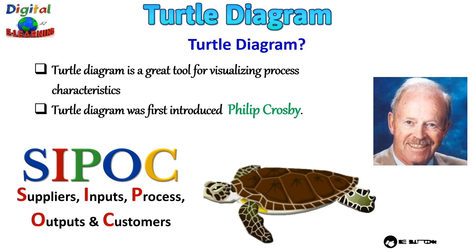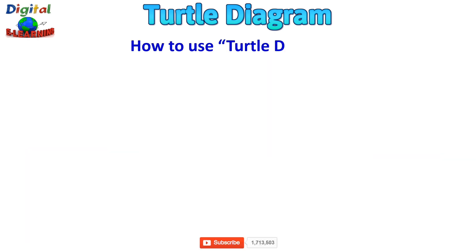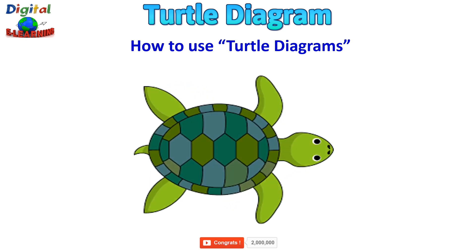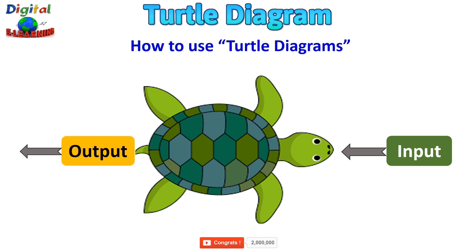Let us see how to use this turtle diagram. We first construct a turtle, then create the input — this category defines the details of the actual process including documents, raw materials, information, or requirements. Then we have the output, where we enter the actual process output such as products, documentation, and records. In between we have the process, which is the center of the diagram — this box addresses the value-adding steps and any sequence that falls within the scope of a process.